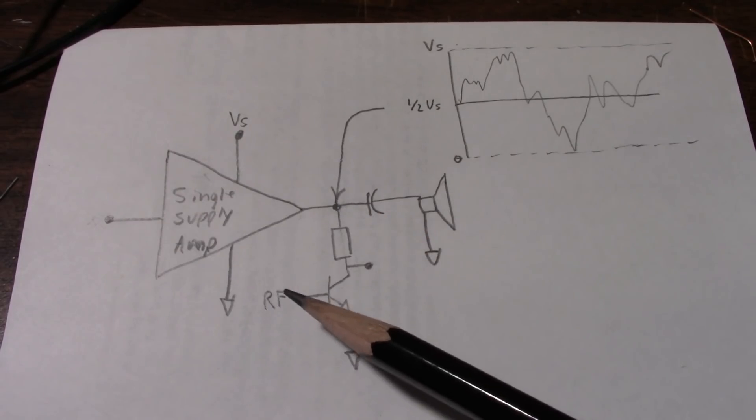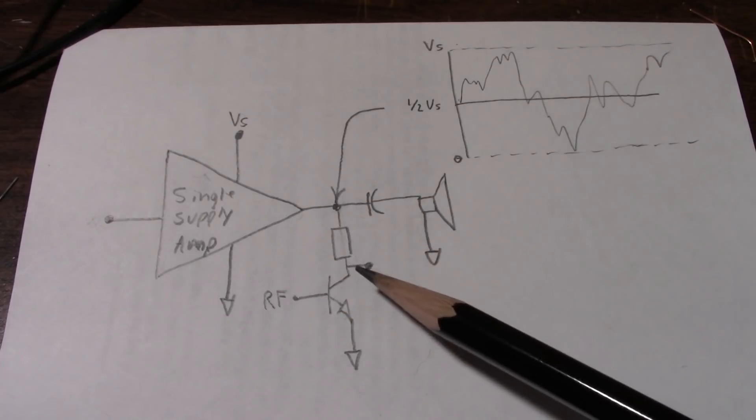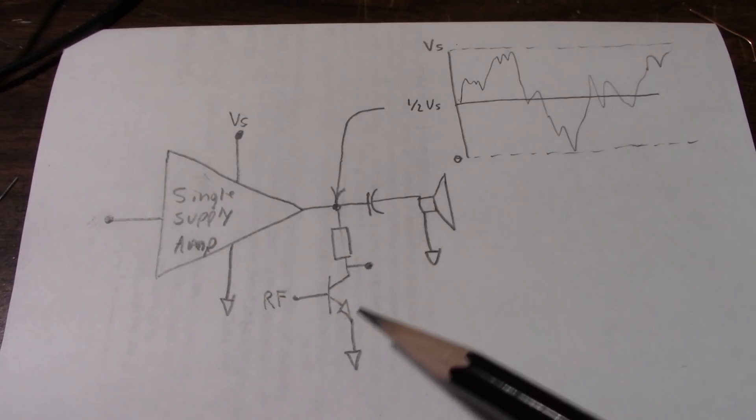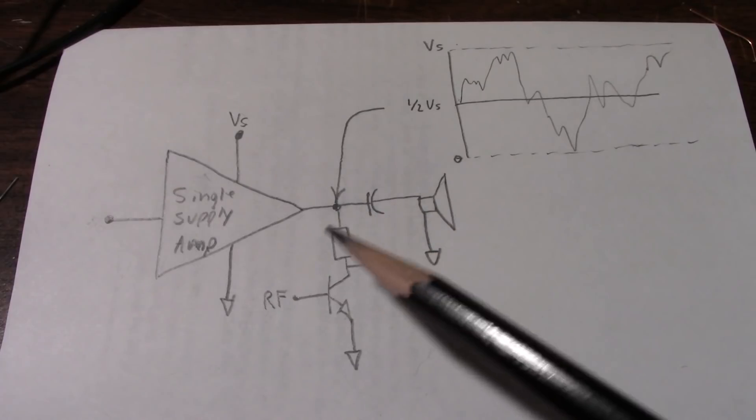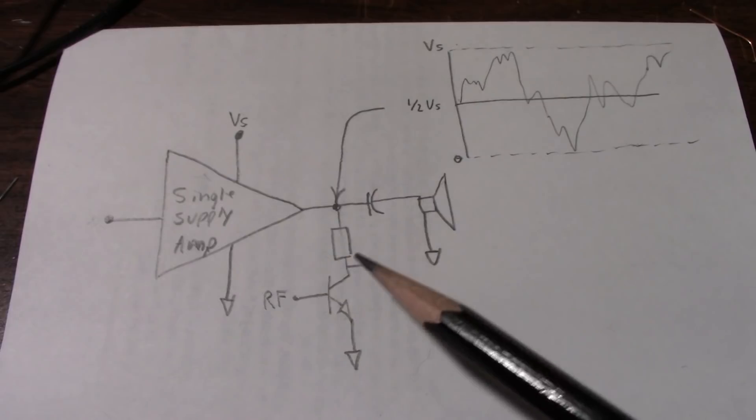I could input an RF signal carrier to the base of the transistor. And at this collector, I'd get the RF carrier signal out. Now keep in mind this is a simplified circuit. I'm not showing the coils and capacitors and everything. This is just for explanation.